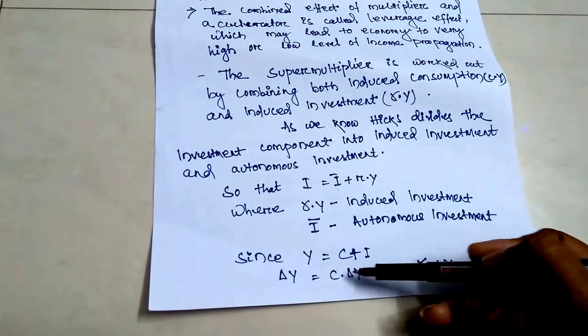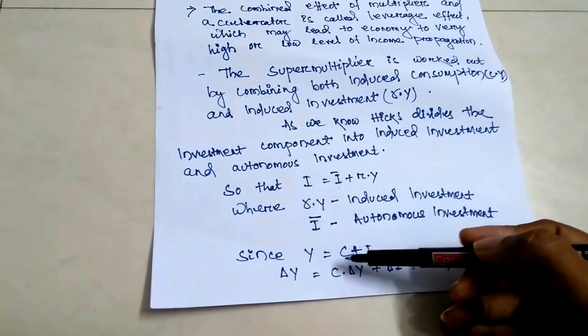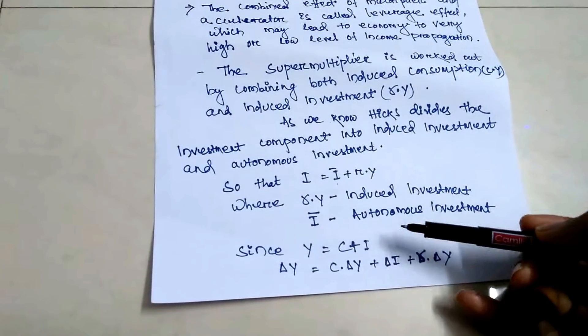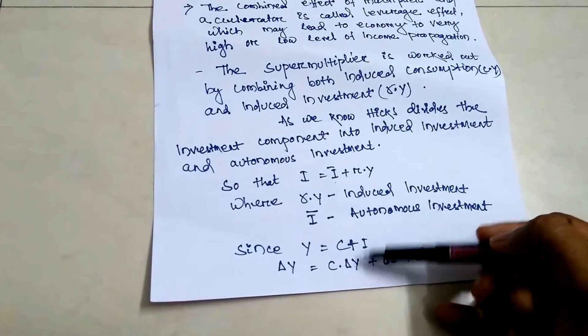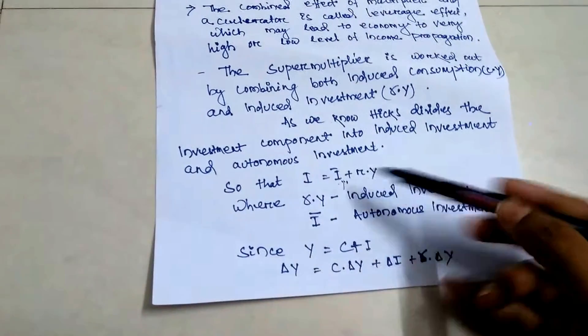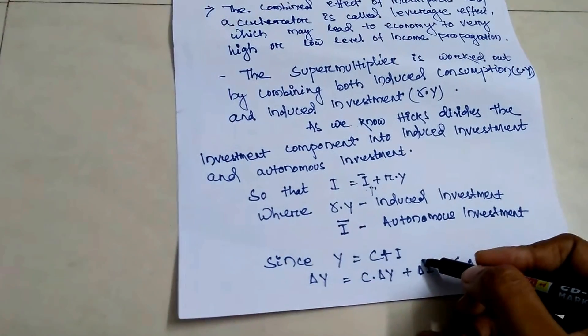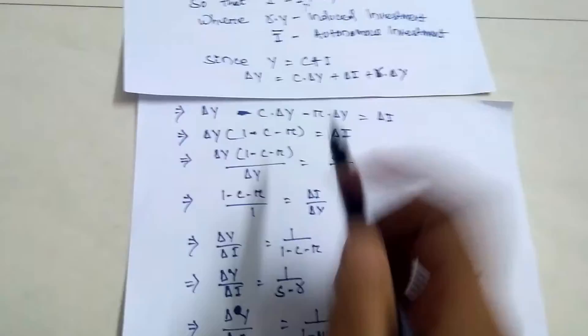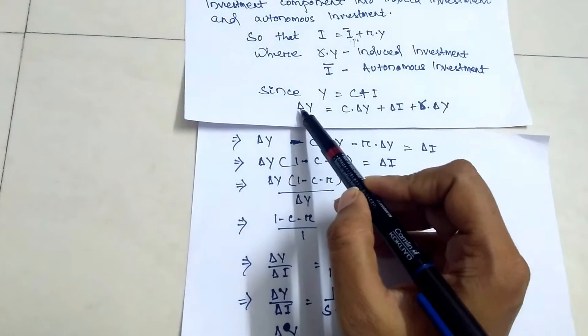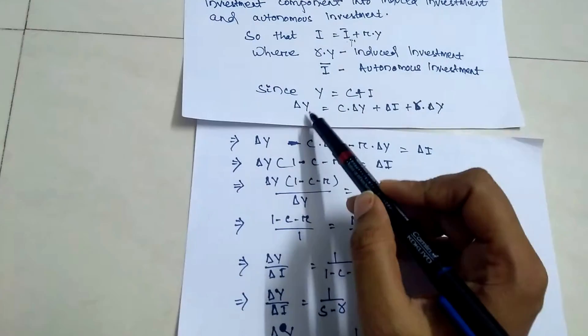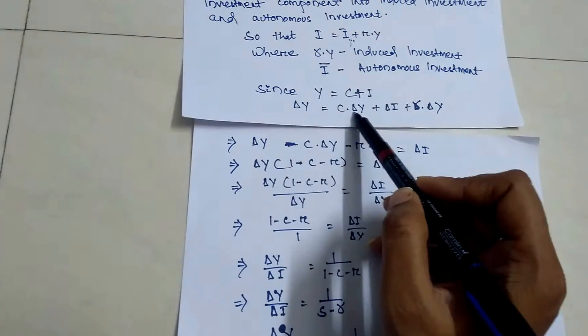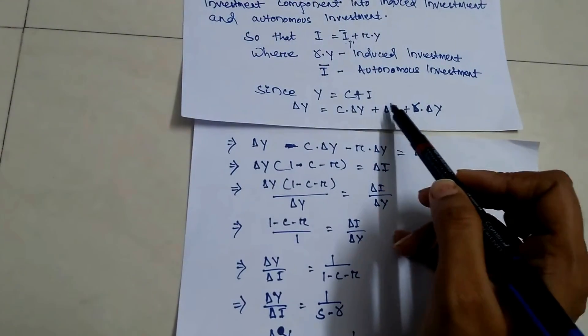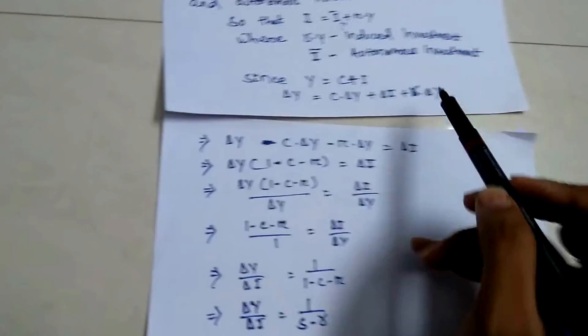Since we know that Y is equal to C plus I — income equals consumption plus investment — change in Y equals change in C plus change in I. In place of I we substitute the investment formula. So change in Y equals change in autonomous investment plus r into change in Y.